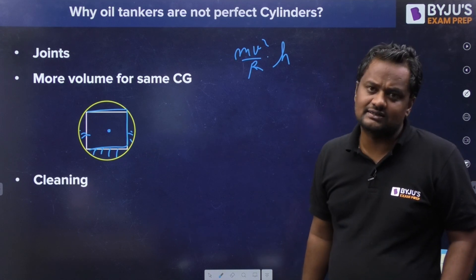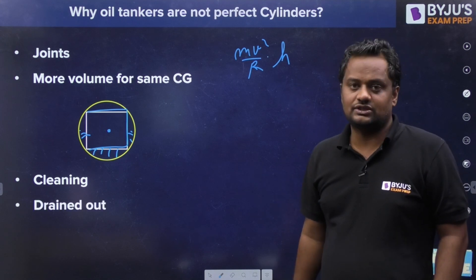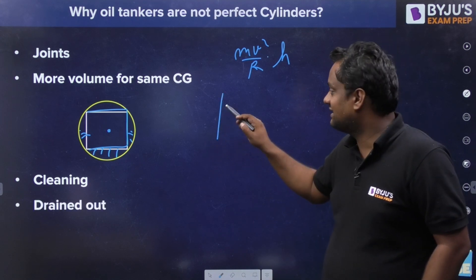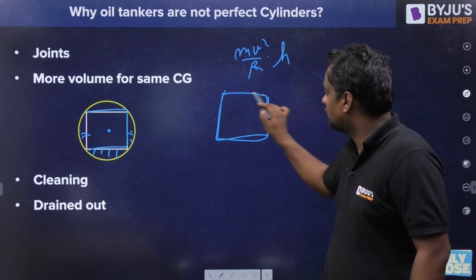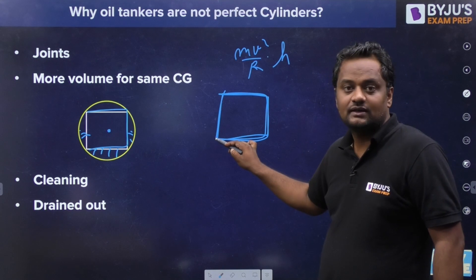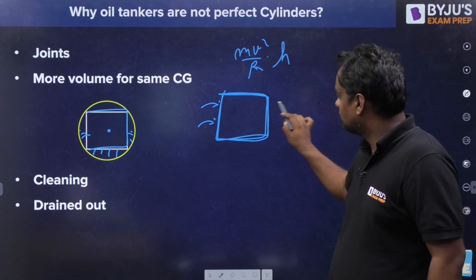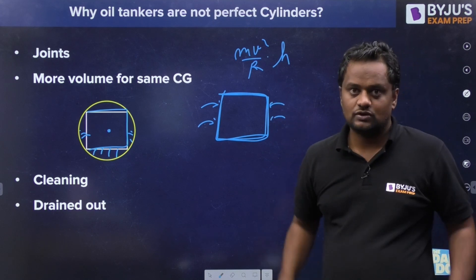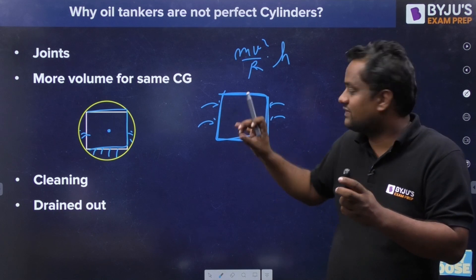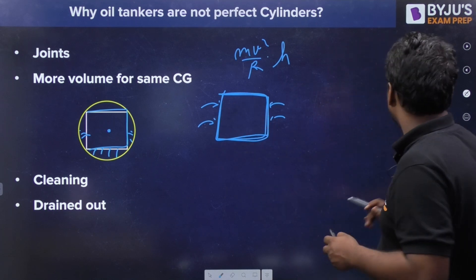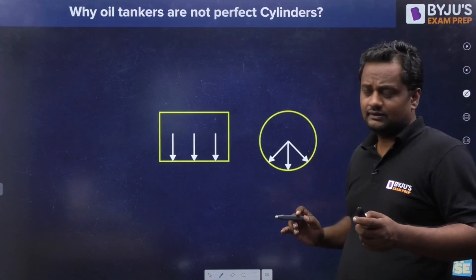The third point is that cleaning is difficult with a rectangular shape because at the edges and corners it is hard to reach. Also, drainage is a problem — if you study chemical engineering, you'll know that in rectangular containers, drainage at the sides is difficult. Sometimes shaking is needed so that sticky fluid can be drained out.